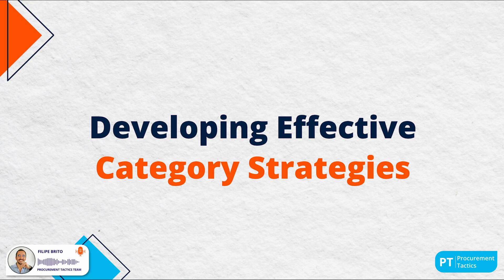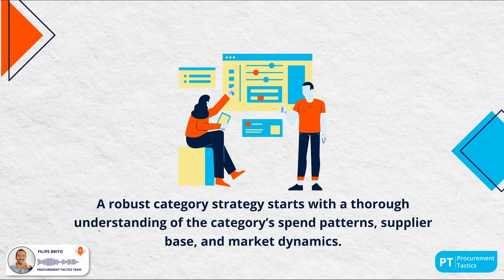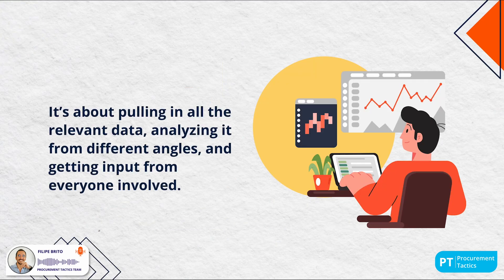Let's look at the key elements of a successful category strategy. A robust strategy starts with a thorough understanding of category spend patterns, supplier base and market dynamics — you need to dive deep into how money is spent, who the key suppliers are and what's happening in the market. It should also incorporate clear objectives and performance metrics to measure success, pulling in all relevant data, analyzing it from different angles and getting input from everyone involved to ensure all perspectives are considered.